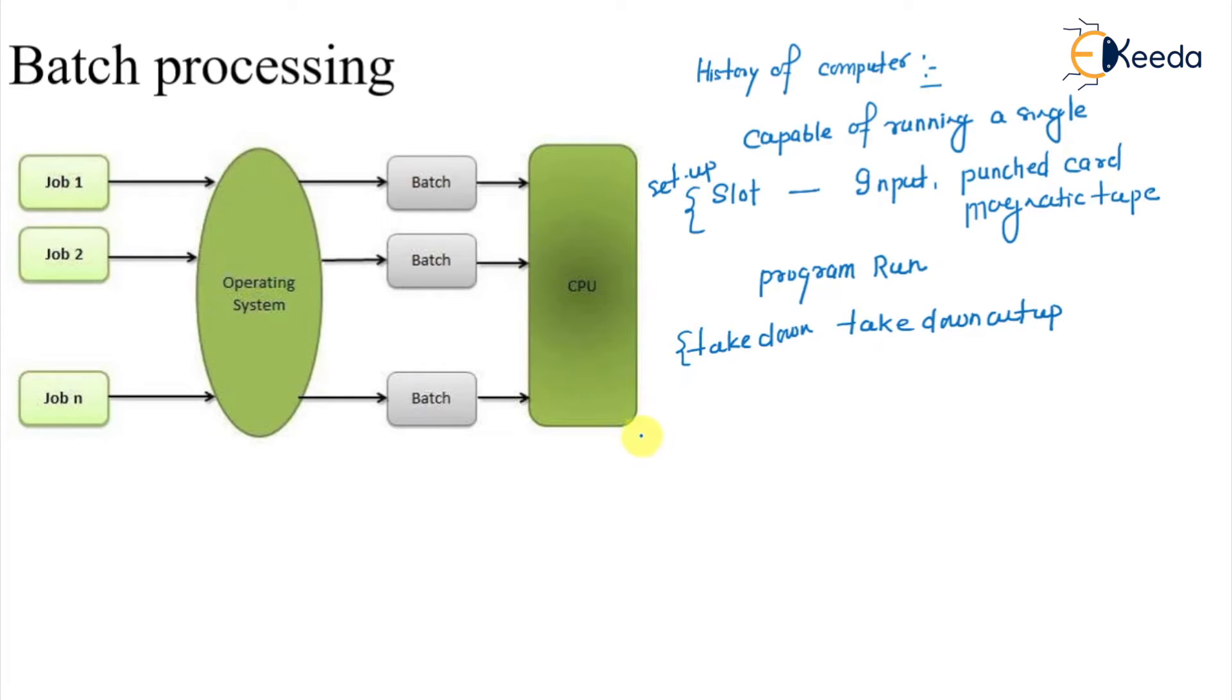Now what happens here is as the speed of the computer increases, this setup time and take down time become a larger percentage. It is taking more time rather than execution of a program. So this becomes significant in terms of performance of a computer, taking large time to setup and taking down the output.